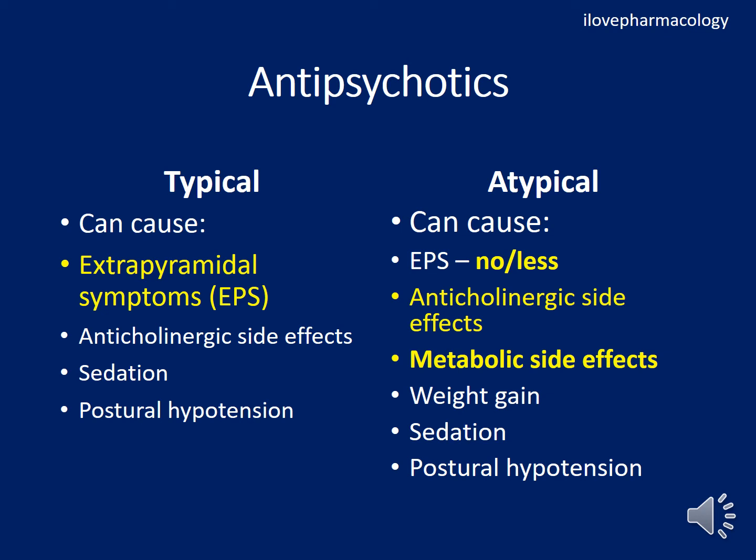Neuroleptic malignant syndrome presents as hyperthermia, extreme generalized rigidity, autonomic instability, and altered mental status. It can be treated by giving parenteral intravenous dantrolene or bromocriptine. Tardive dyskinesia is the last extrapyramidal symptom to appear — it occurs late in therapy.